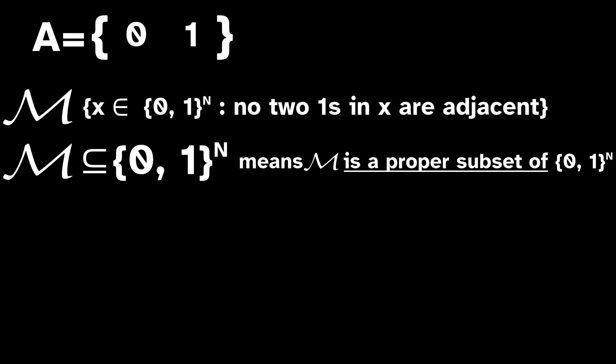You could generate a sequence belonging to this subshift by flipping a coin infinitely many times. On heads, write zero, and on tails, write one zero. Then every one will be padded on both sides by zeros, and no ones will be touching.